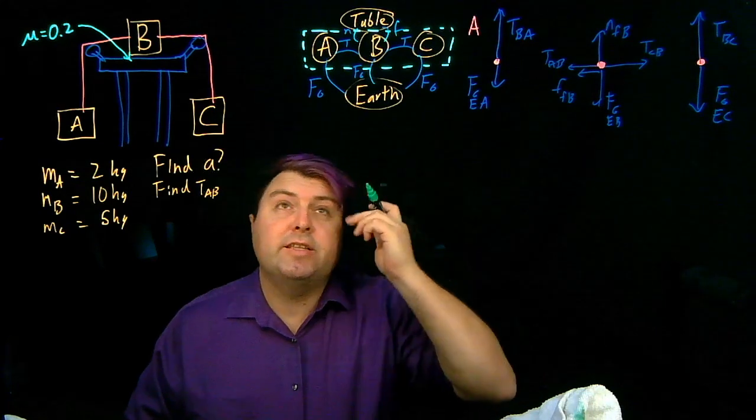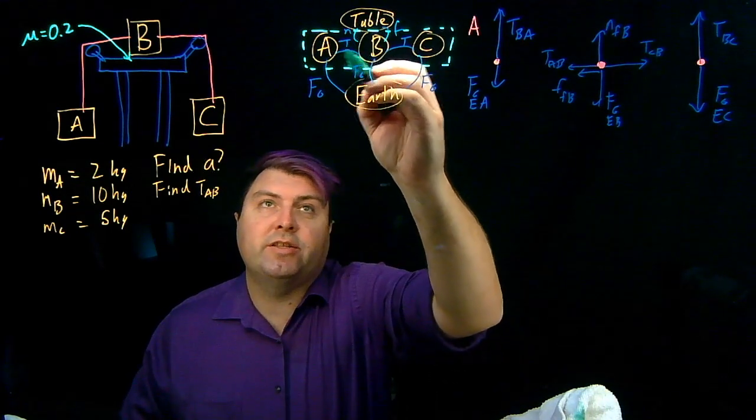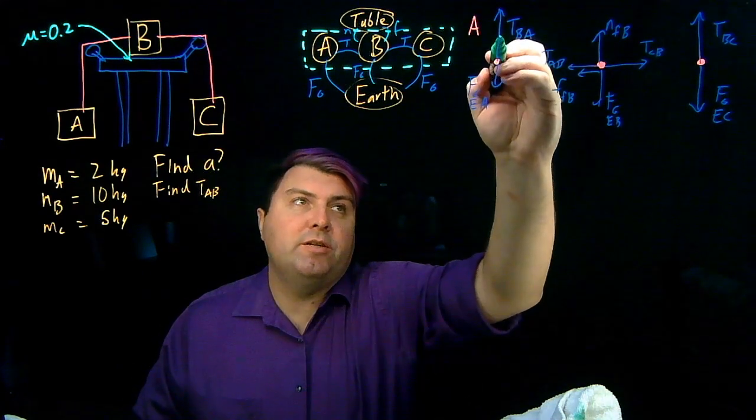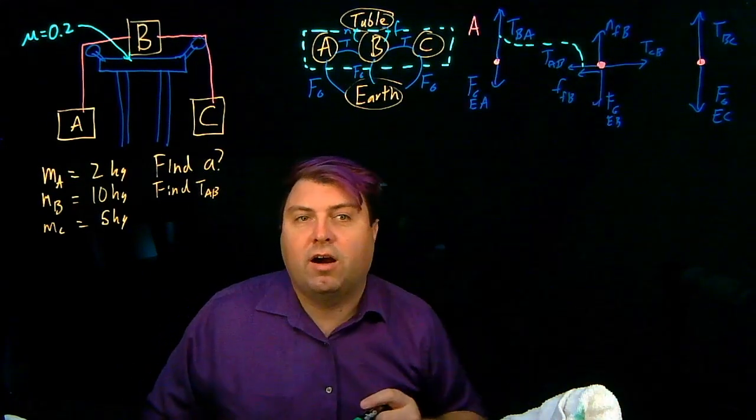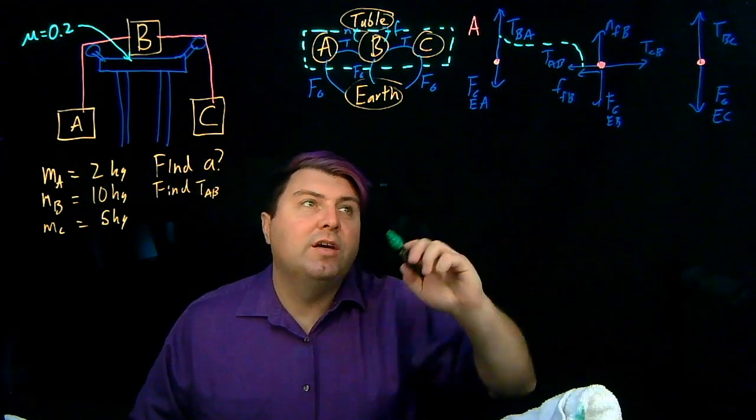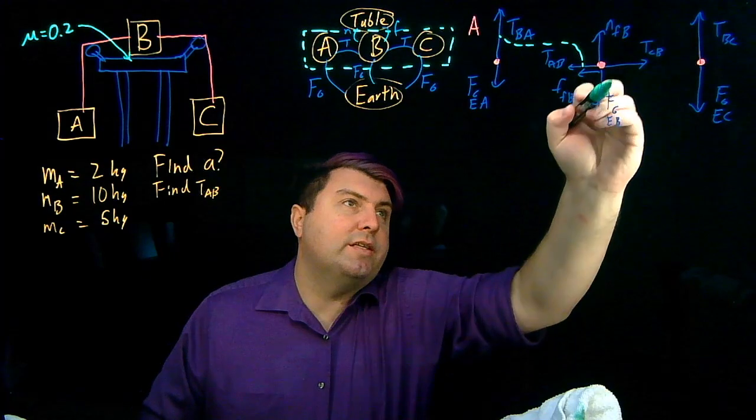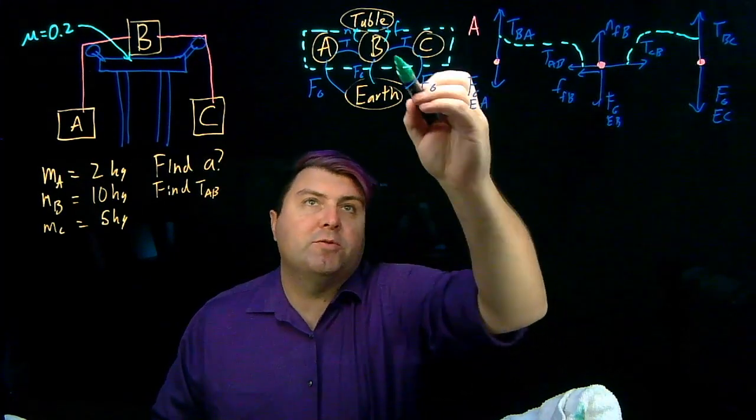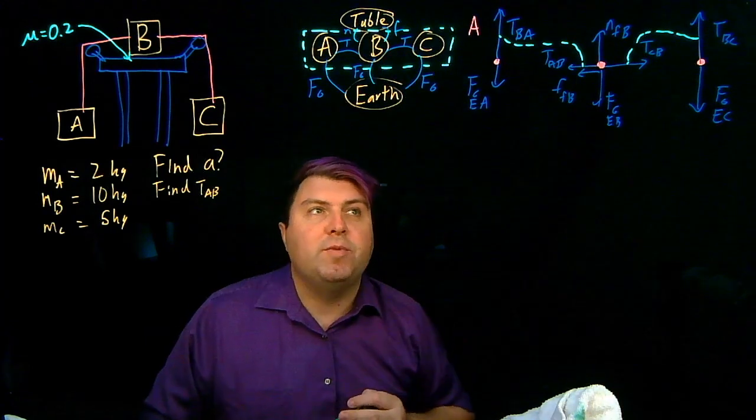Now we can look and see that we have this tension here. That's an internal force between A and B, which means these tensions, TBA and TAB, are third-law pairs. Nicely enough, we can also look at their subscripts, BA and AB, and see that they're third-law pairs. We can see that CB and BC are third-law pairs.